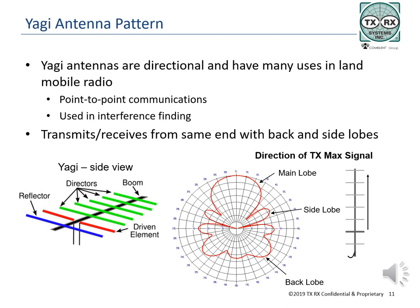By carefully spacing the elements, the phase relationship is established in the antenna, which causes the signal to be reinforced in one direction and reduced in another. As more director elements are added, the main beam becomes progressively narrower and transmits further. Yagi antennas do have a back lobe and side lobe areas around the antenna where it will transmit or receive other than from the main lobe. Be careful when aiming the antenna that you do not pick up a side lobe instead of the main lobe, and remember that Yagis do have a back lobe, which will allow other signals from other systems to enter the antenna from the opposite direction.